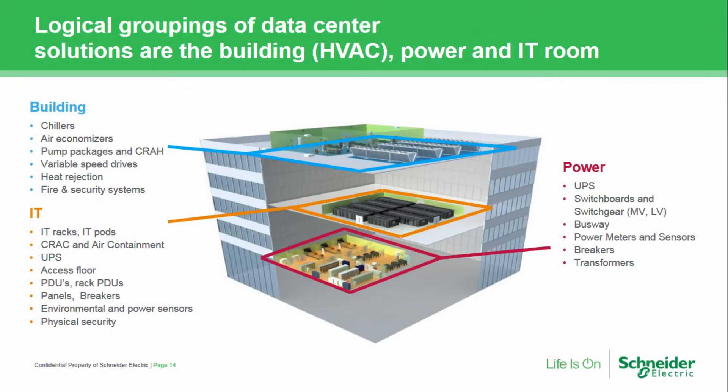I wanted to paint a picture of what are the main components of data center infrastructure. First you have building type infrastructure. We're talking about chillers, air economizers, the pumps for your chilled water plant, also heating, ventilation, and air conditioning, or HVAC. So you've got your building portion.